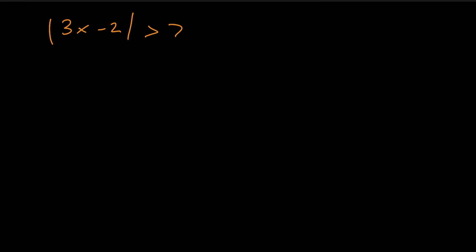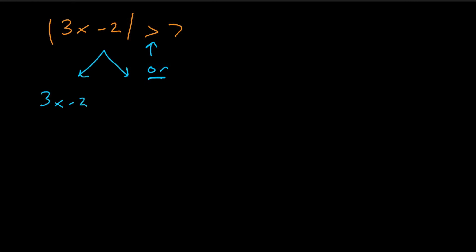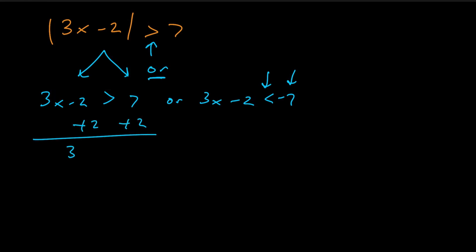Now we're able to solve the original problems from the beginning. For the first one, identify it as a greater than — so it's an 'or' type. First step is to isolate whatever's in the absolute value on one side. Then split into two inequalities: 3x minus 2 is greater than 7, or 3x minus 2 is less than negative 7 — flipping the inequality sign and changing the sign of 7.